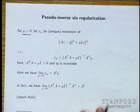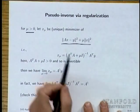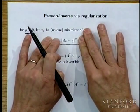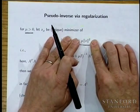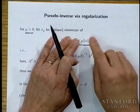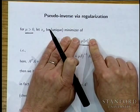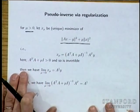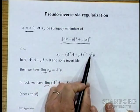We can also get the pseudo-inverse via regularization — also called ridge regression in statistics. For positive μ, you minimize ‖Ax − y‖² + μ‖x‖². The solution is (A^T A + μI)⁻¹ A^T y. This inverse is always valid regardless of whether A is fat, skinny, or full rank, because μI ensures positive definiteness.